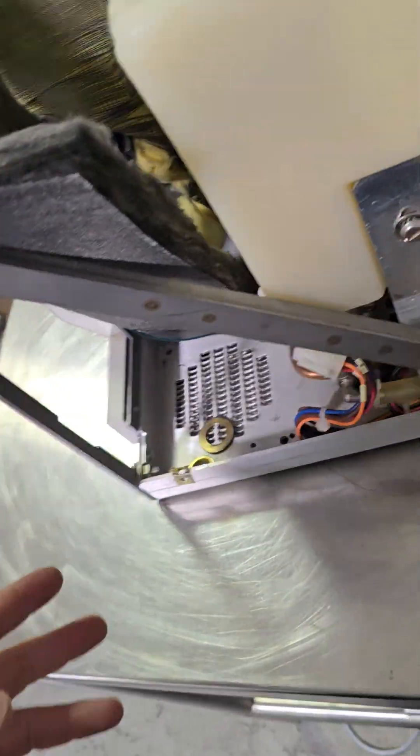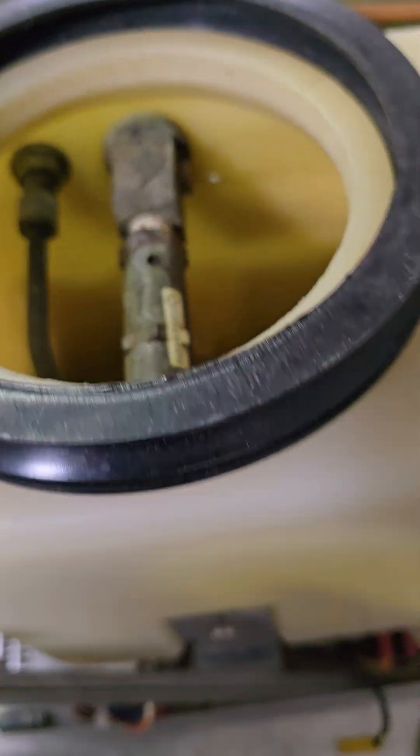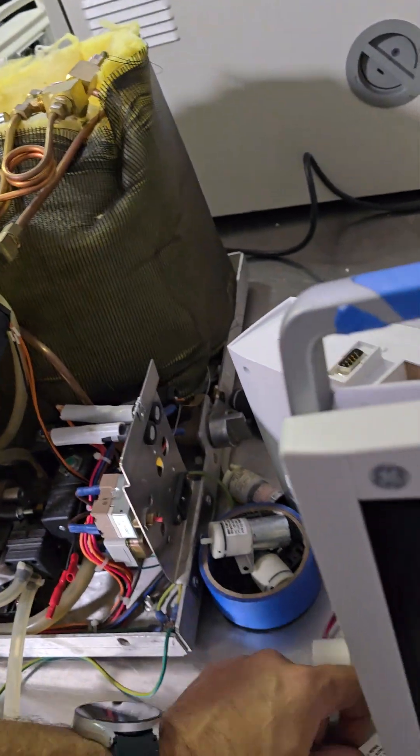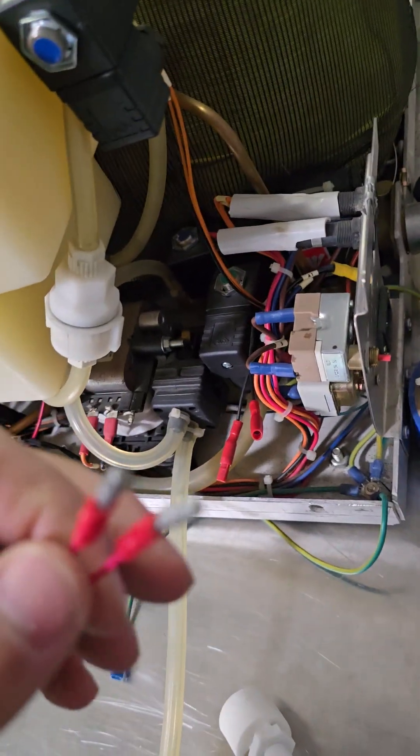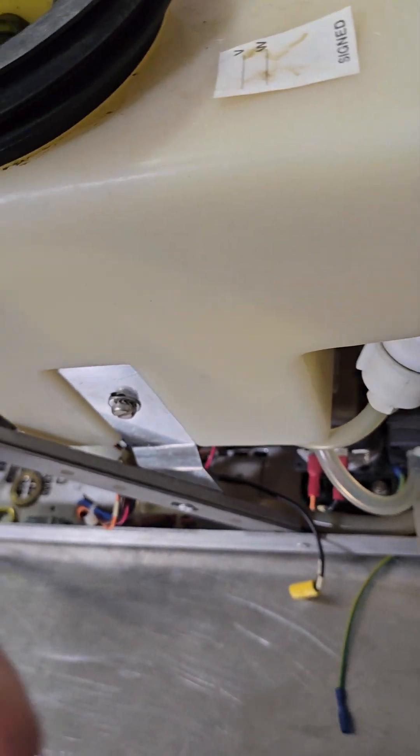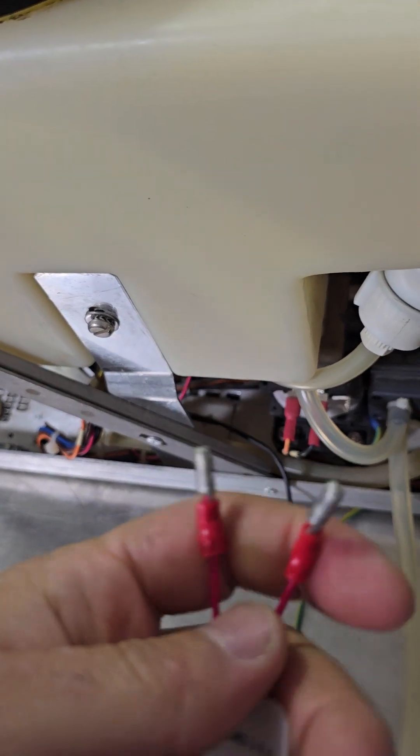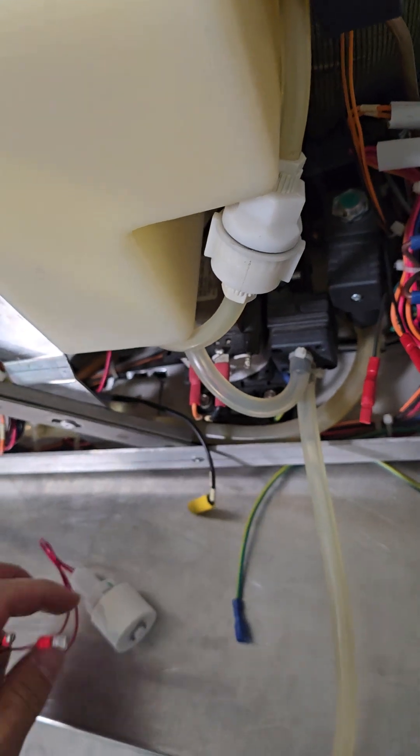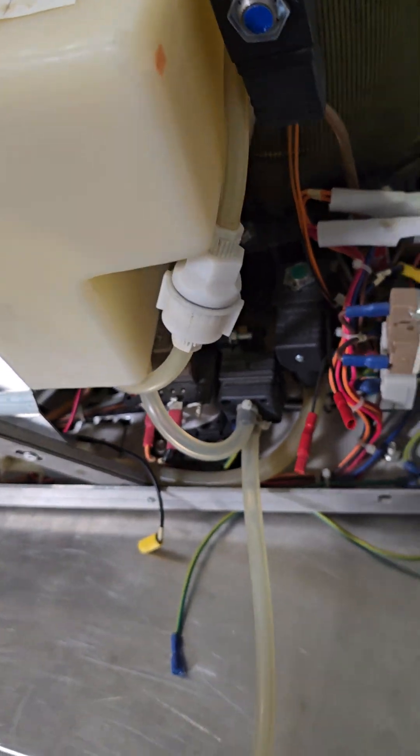If you're getting the add water message and you've clearly got water here, check your water level sensor. All you really got to do is test these out. If it's in the reservoir and it's full, this piece is up, you should be getting a resistance reading across these two. Just put your meter there. If you get an OL, then this is your problem. This thing is not working. They do fail, not often.